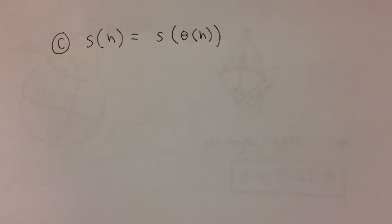For part c, we need to write a function for s in terms of h. This is actually a composition of the two functions we wrote in parts a and b. Since we now know that s is equal to 7,920 times theta, and theta is equal to the inverse cosine of 3,960 divided by the quantity 3,960 plus h, we can substitute the expression equal to theta into the equation for s.